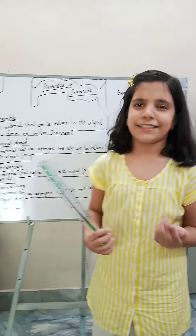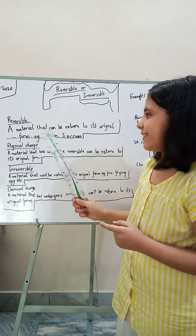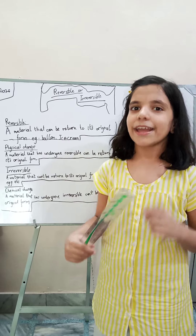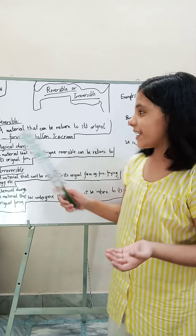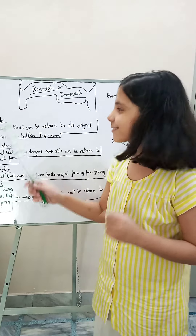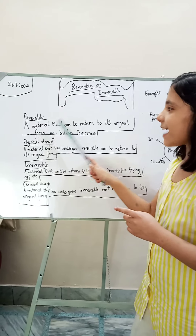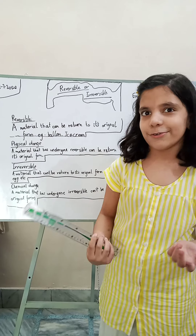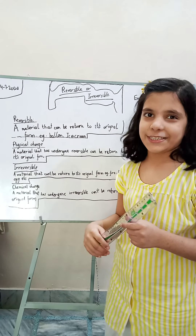What is reversible? What is irreversible? Let me clear your answer. Reversible is a substance — like we have an ice cream, and whenever it melts, we just put it in the freezer and it's frozen again. This is called a reversible change. A material that can be returned to its original form. Examples include a balloon and ice cream. This is called reversible.